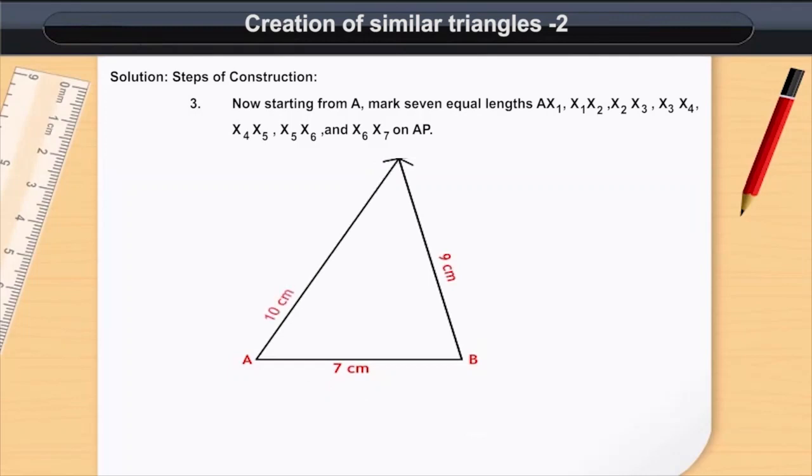mark 7 equal lengths A X1, X1 X2, X2 X3, X3 X4, X4 X5, X5 X6 and X6 X7 on AP.